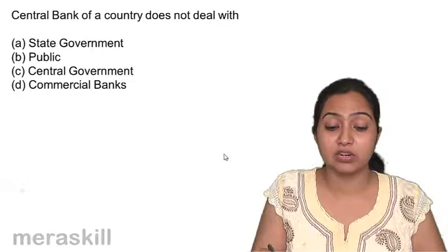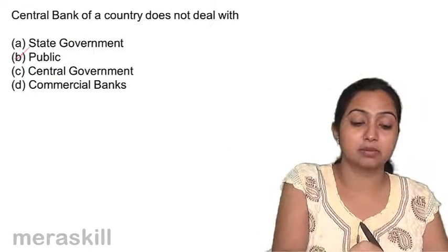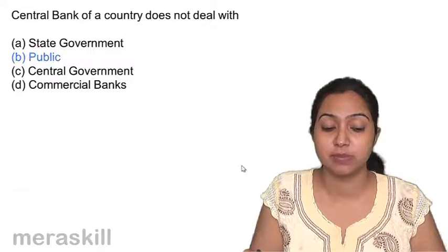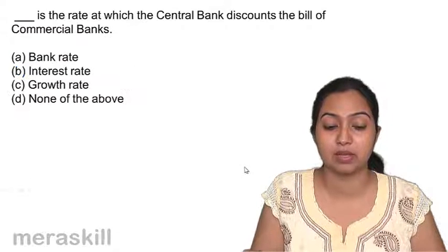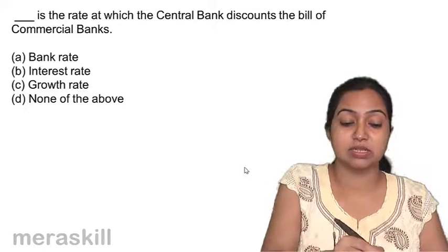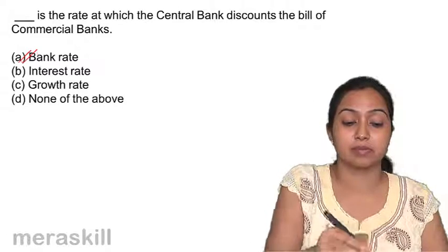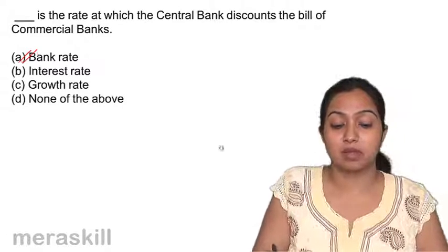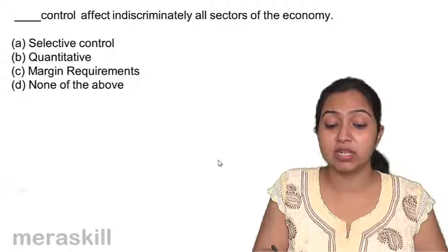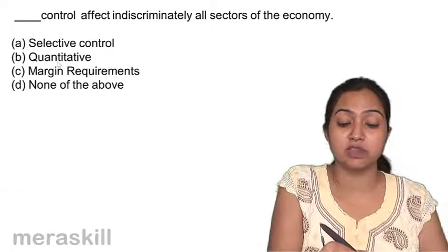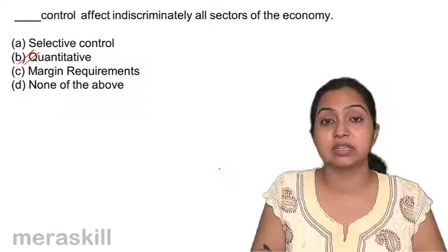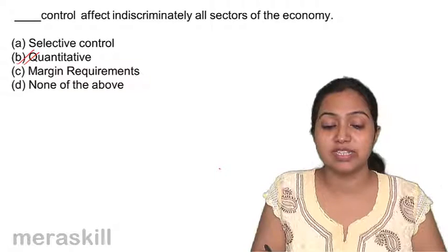The central bank of a country does not deal with the public. It deals with the state government, central government, and commercial banks, but not the public. The rate at which the central bank discounts the bills is the bank rate. Quantitative measures affect all sectors of the economy indiscriminately, while selective measures affect only some sectors.